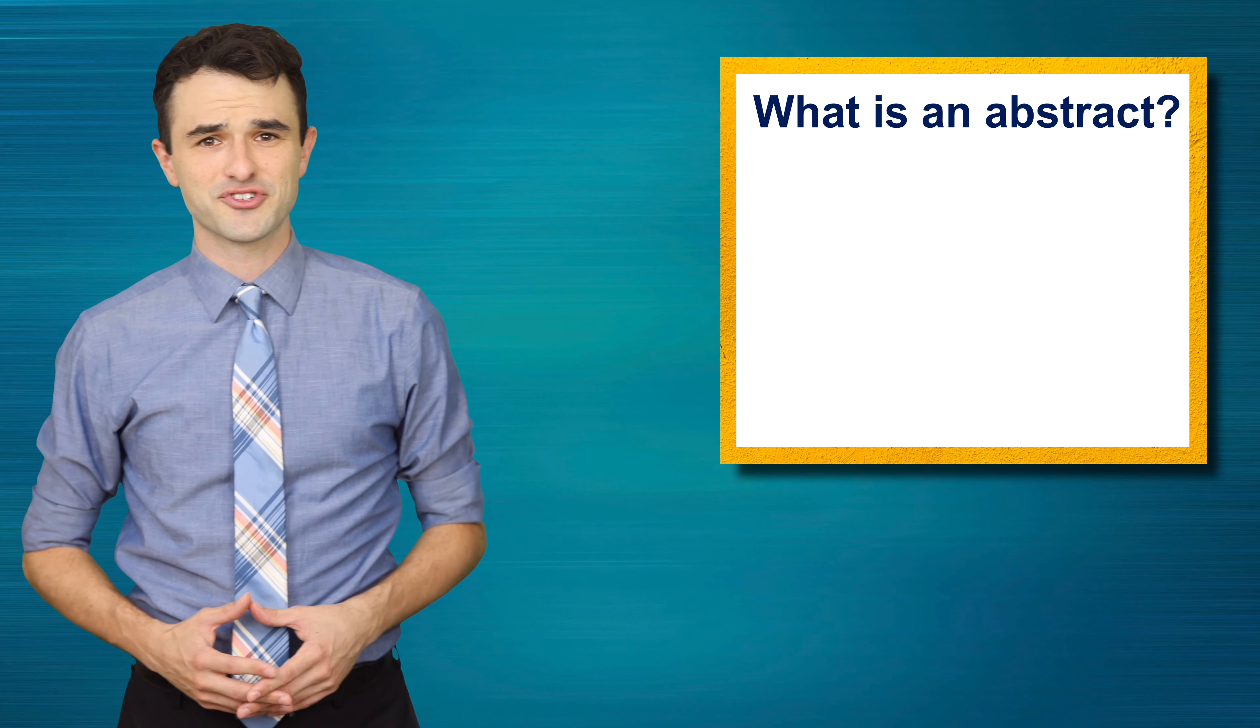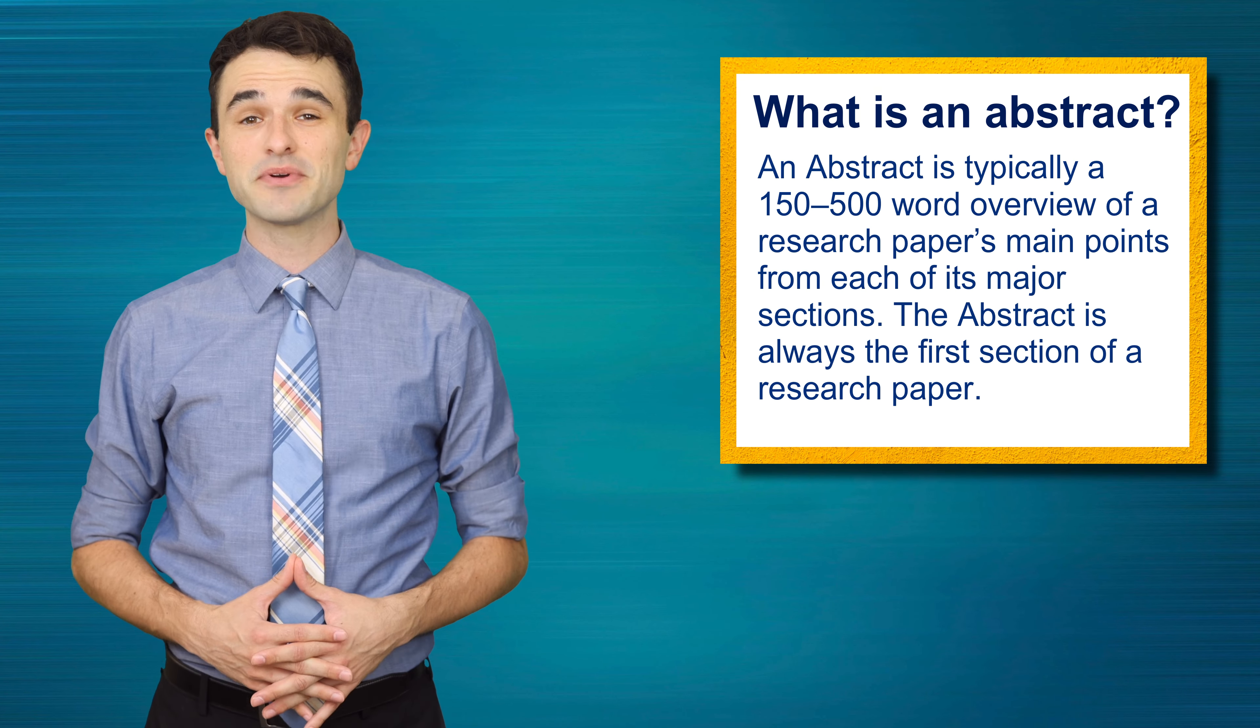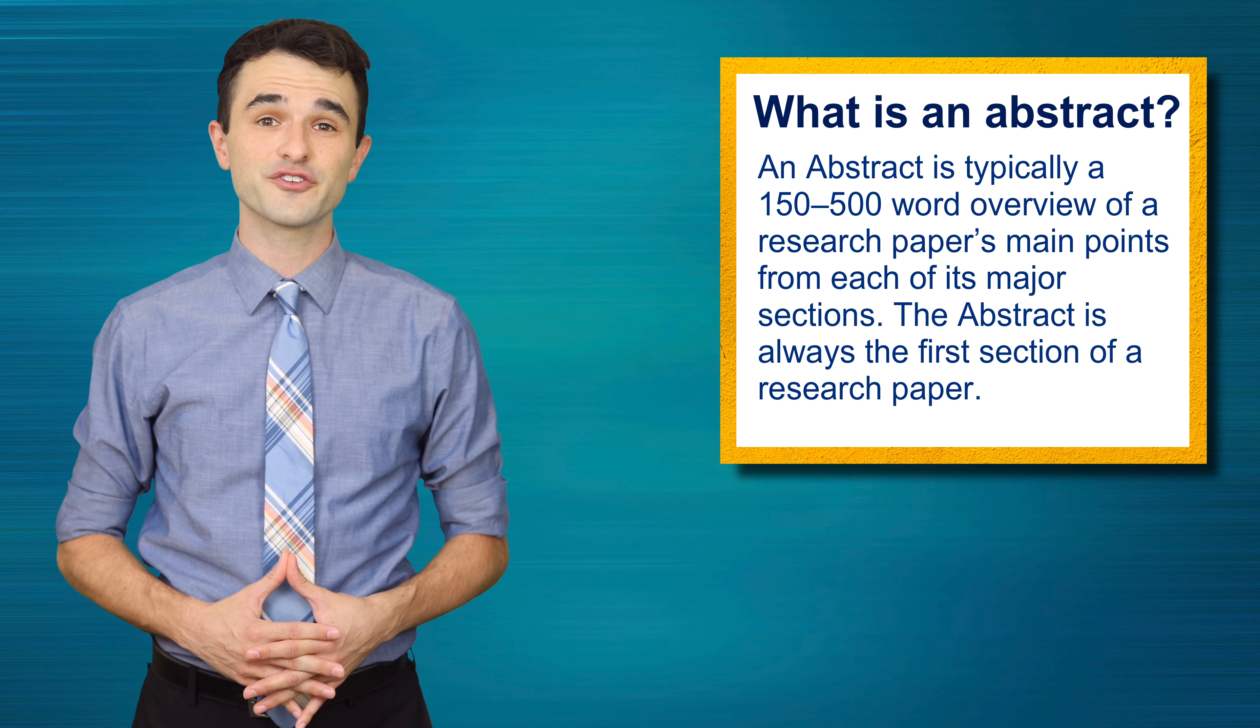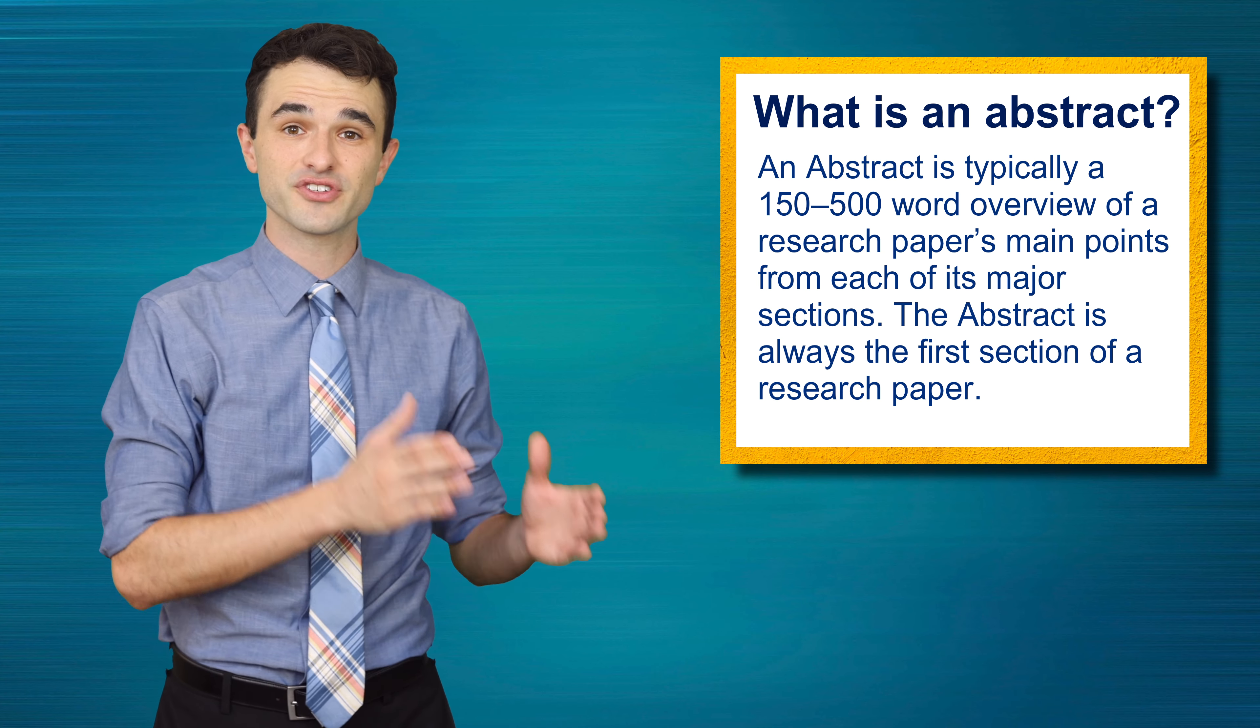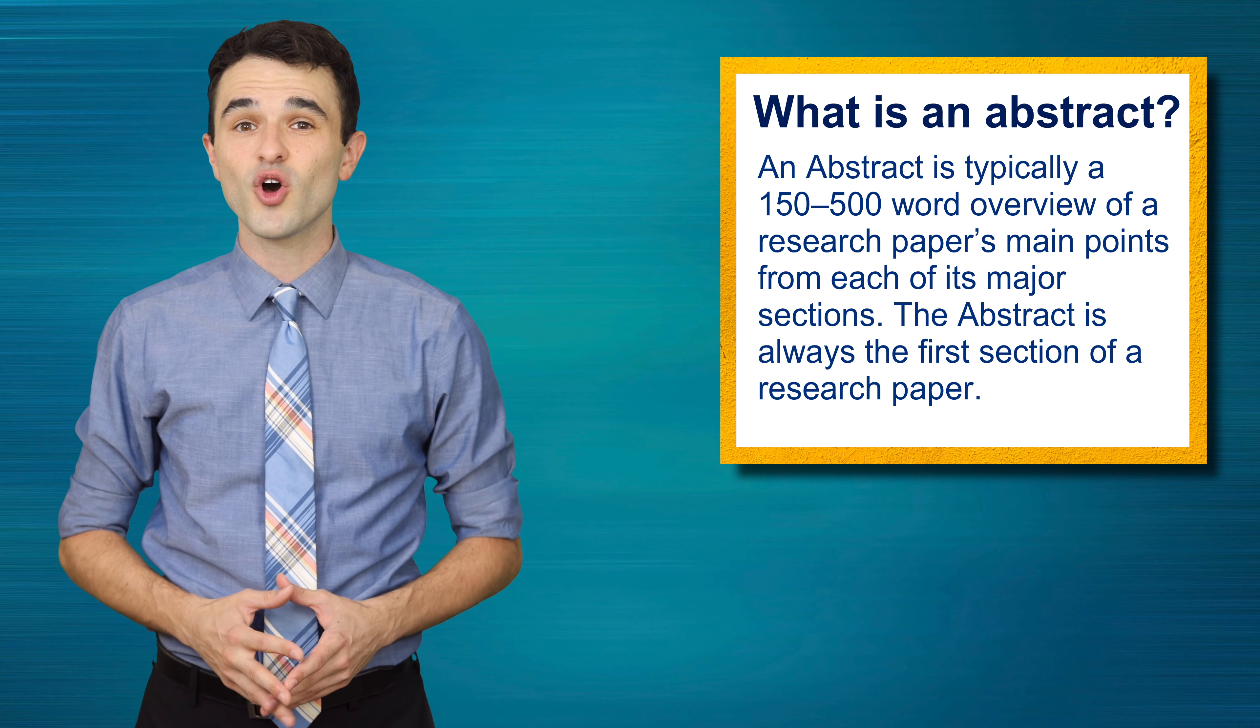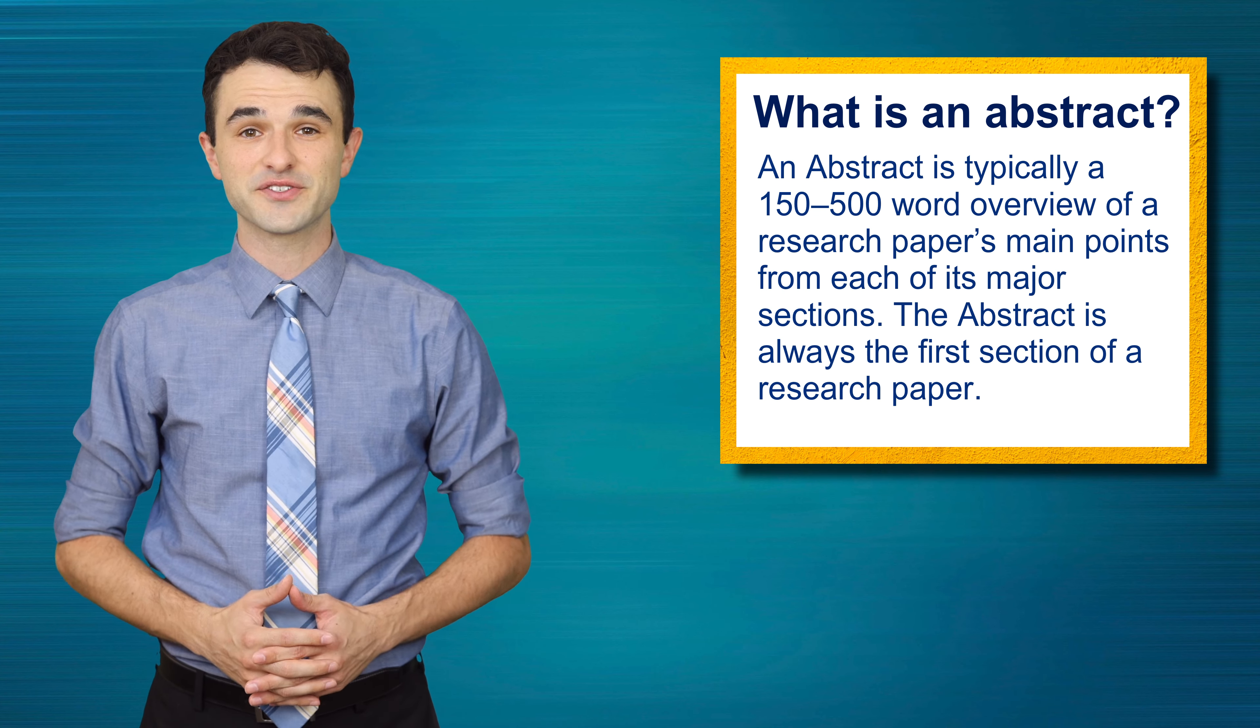What is an abstract? An abstract is typically a 150 to 500 word overview of a research paper's main points from each of its major sections. The abstract is always the first section of a research paper.